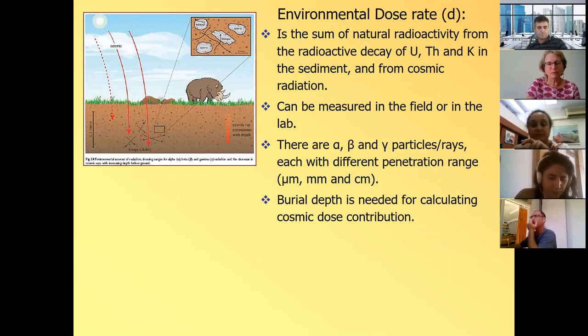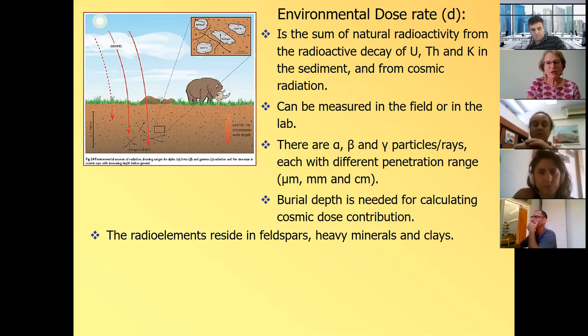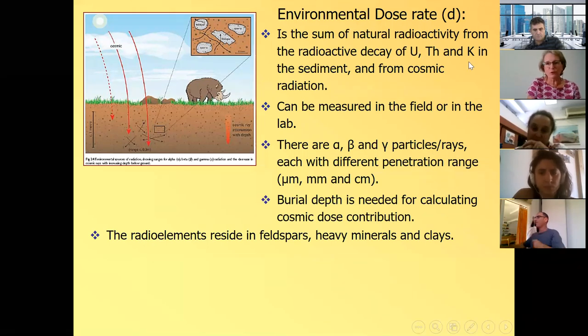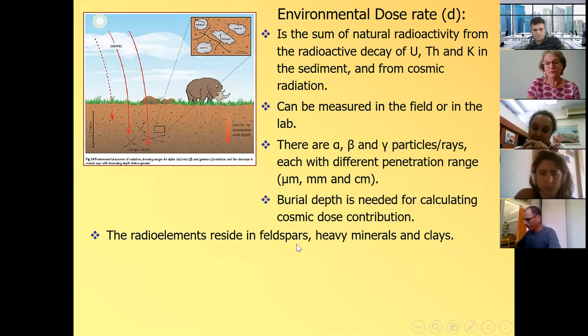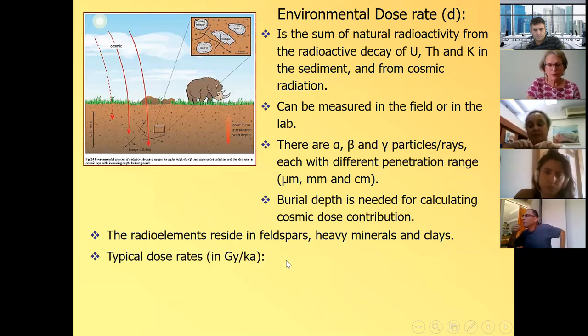So we have a micron for the alpha range, millimeter for the beta range, and some tens of centimeters for the gamma range. And the cosmic can penetrate to a few meters. So we need to know the burial depth so we can calculate the contribution of the cosmic dose. We need to know moisture content because it absorbs the gamma dose. And this radioactive elements, uranium, thorium, potassium, they reside in feldspars, mostly in feldspars, heavy minerals, and clays.